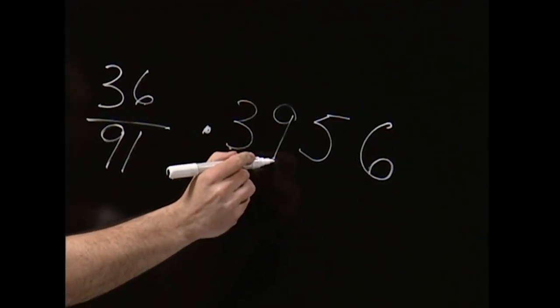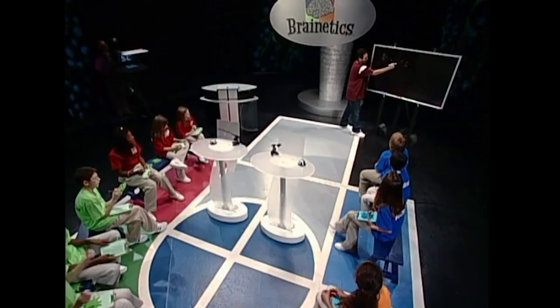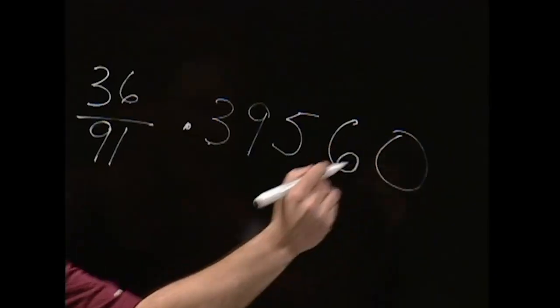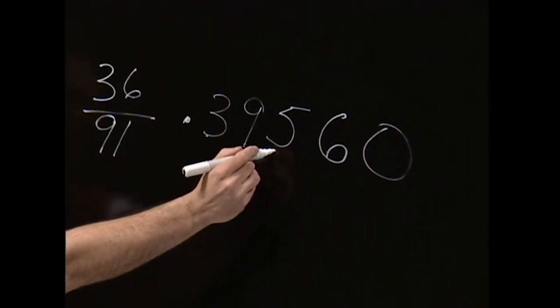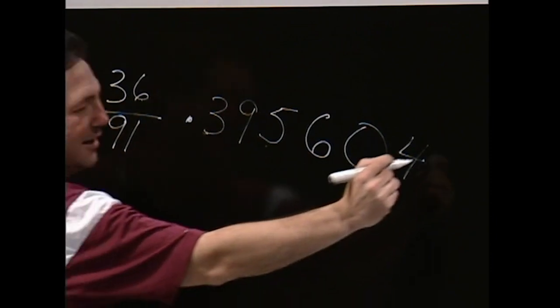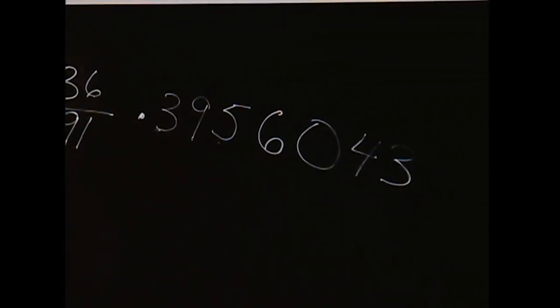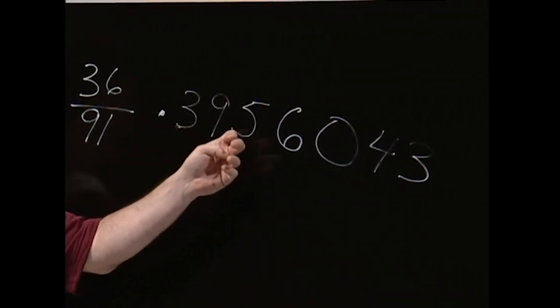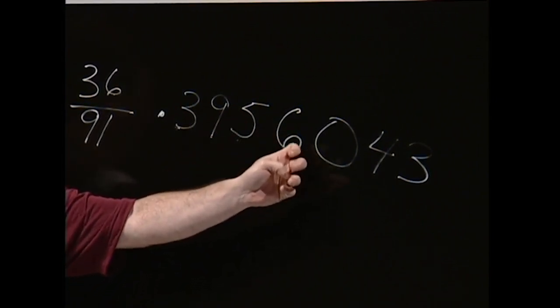To get the next digit of the answer, you go to the second digit of the answer and say, how far is 9 away from 9? No. To get the next digit of the answer, you go to the third digit of the answer. How far is 5 away from 9? 4. That's the answer. And then you make this right at the end. It repeats because that's how long a calculator goes. 0.3956043.